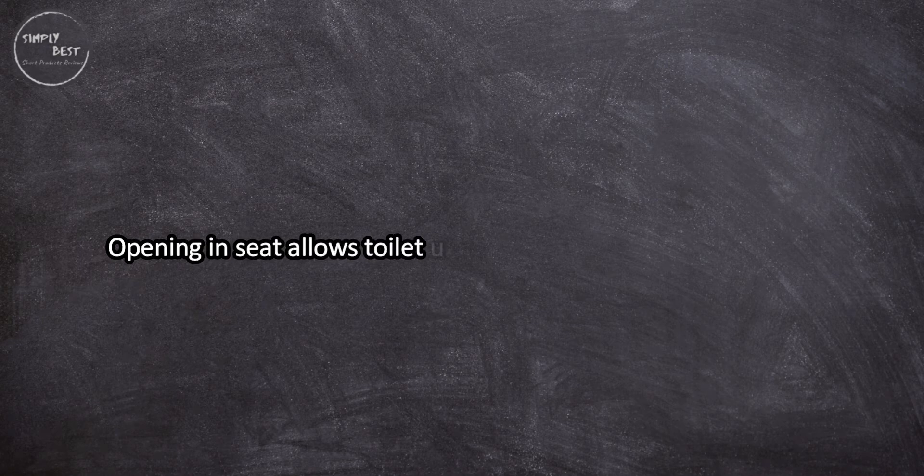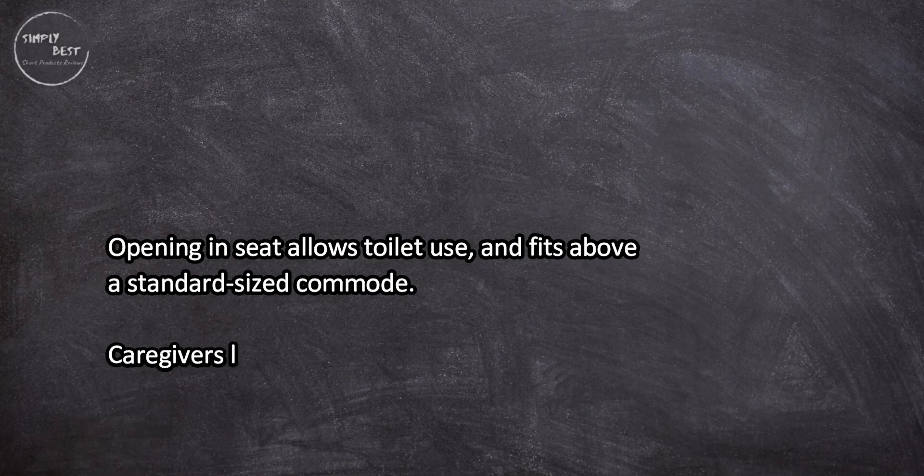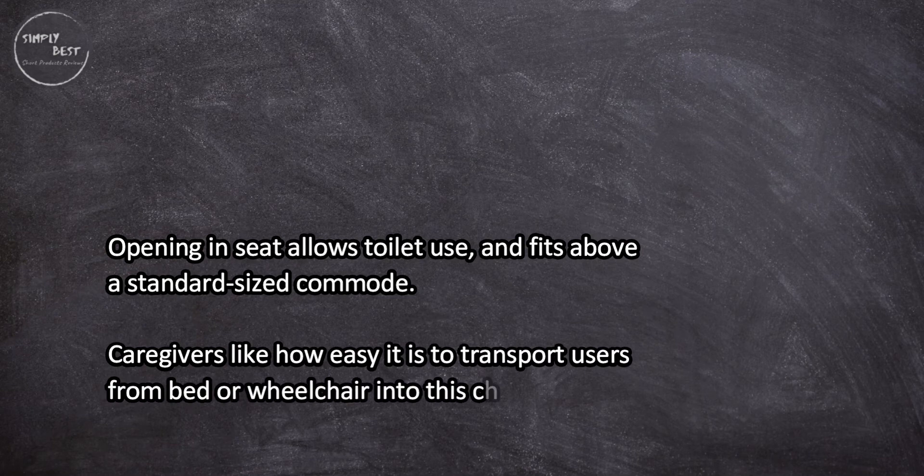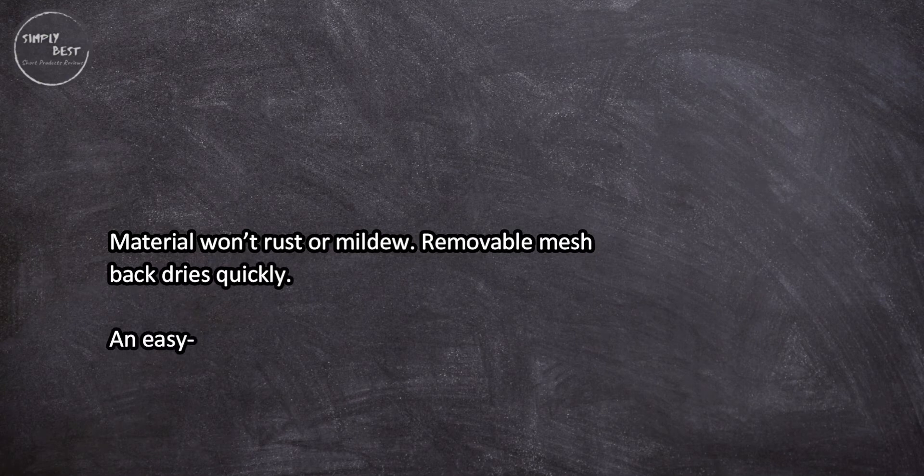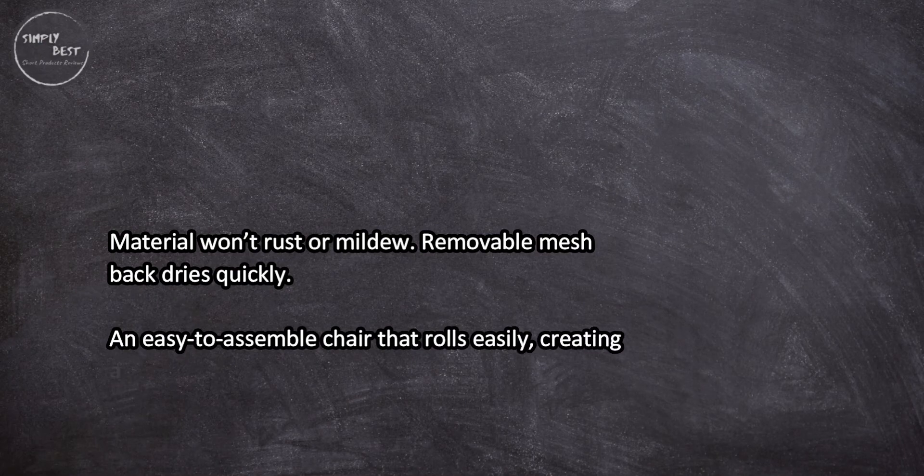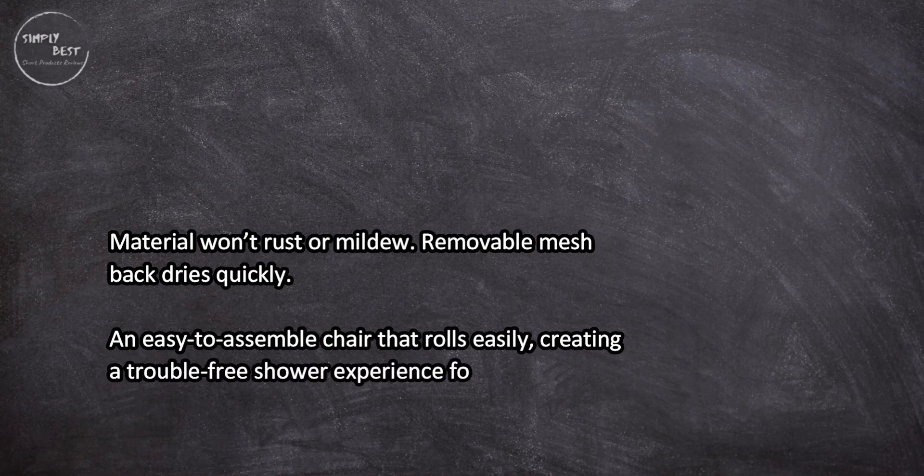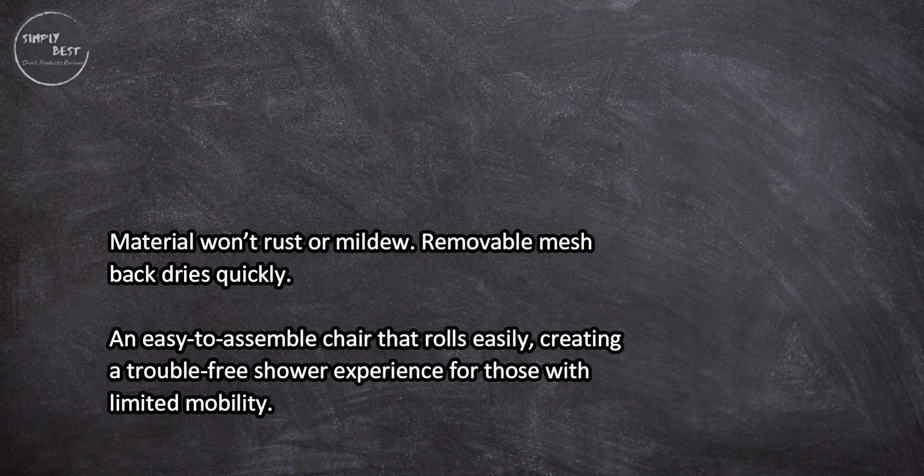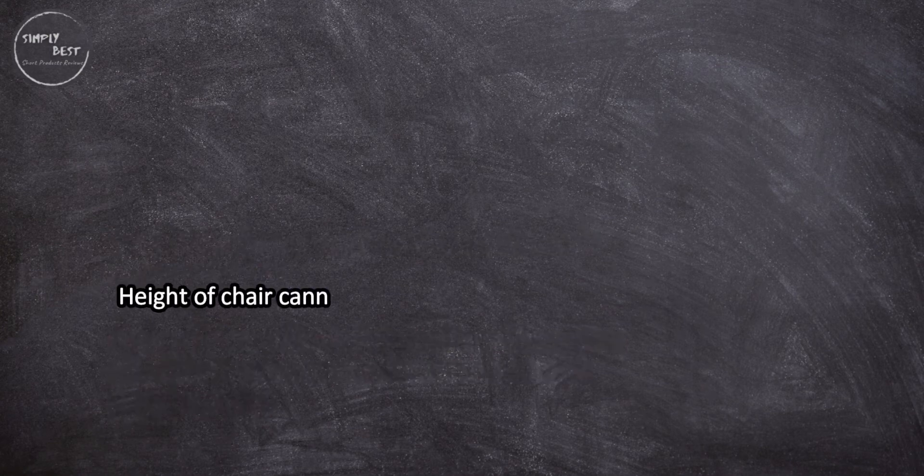At number two, MGM International Standard Shower Chair. Opening in seat allows toilet use and fits above a standard-sized commode. Caregivers like how easy it is to transport users from bed or wheelchair into this chair. Material won't rust or mildew, removable mesh back dries quickly. An easy-to-assemble chair that rolls easily, creating a trouble-free shower experience for those with limited mobility. Height of chair cannot be adjusted, and users would like to see all four wheels lock, not just two.